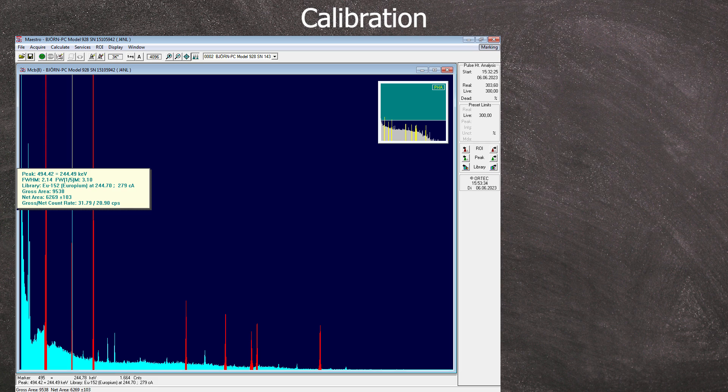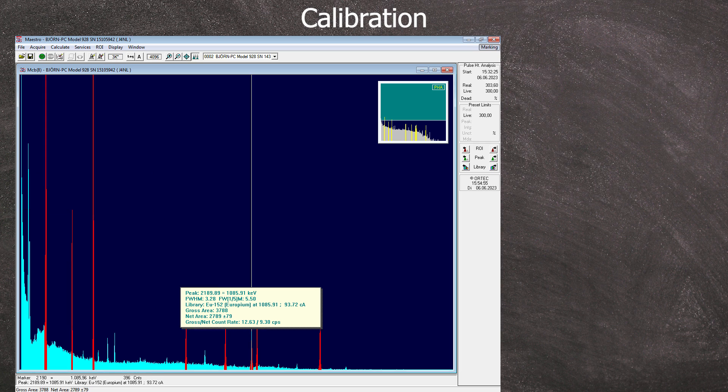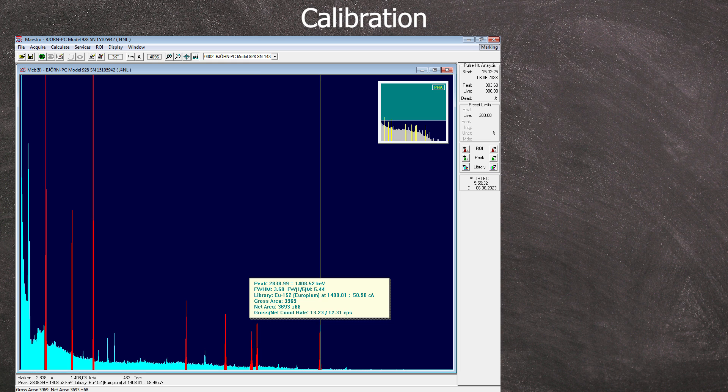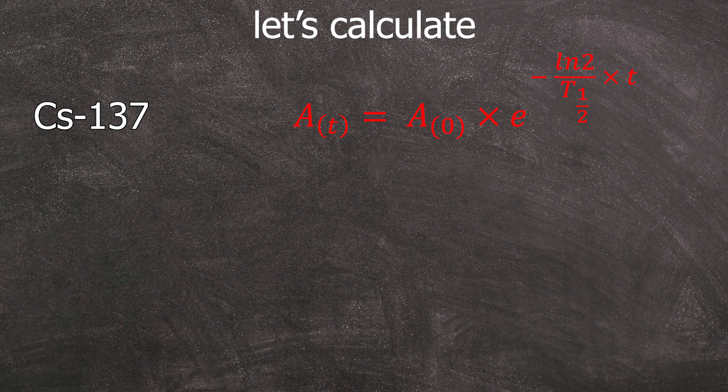Now you note down the net area CPS values from the marked ROI and now you're ready to do the efficiency calibration. On to the calculations. We here have the most important formula to calculate the activity of a sample on the measurement day. For this, the following information are needed.